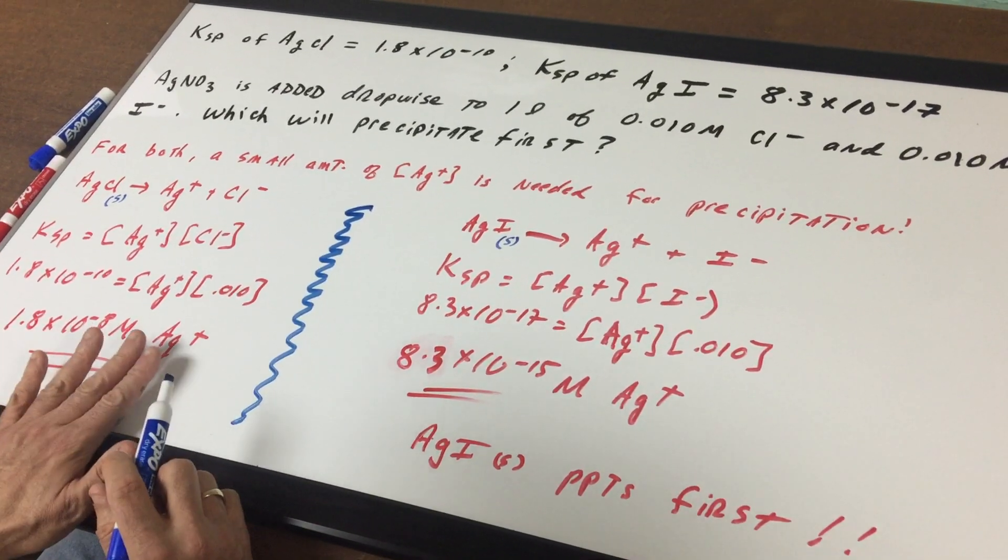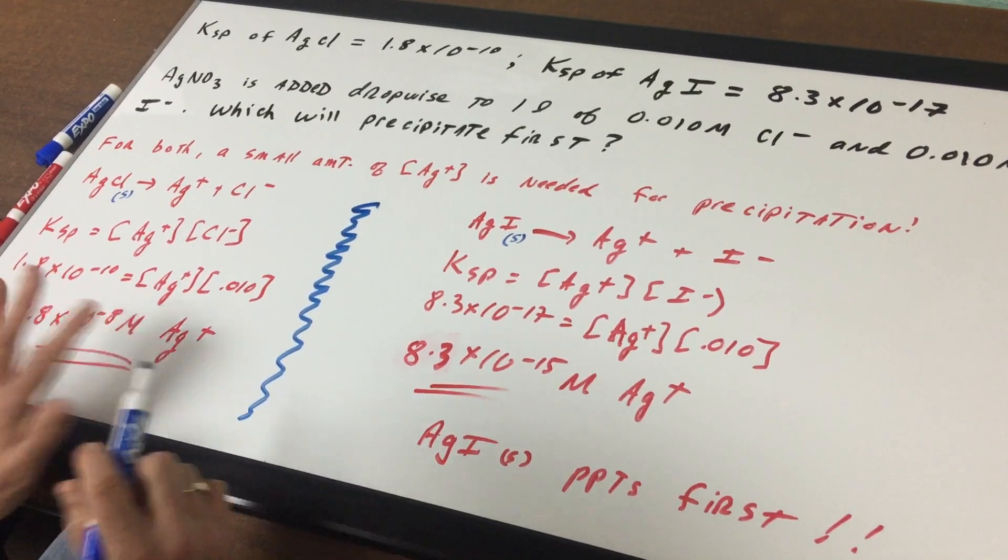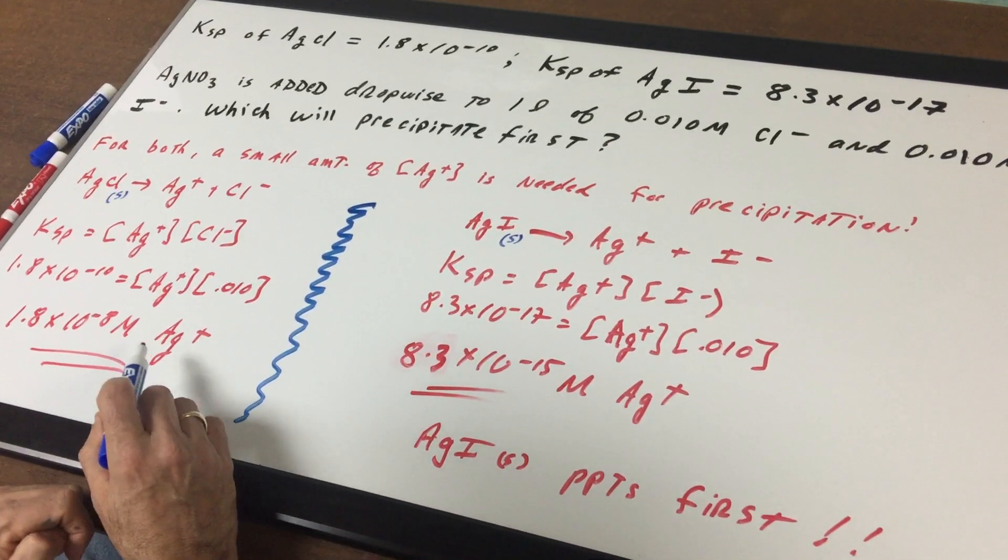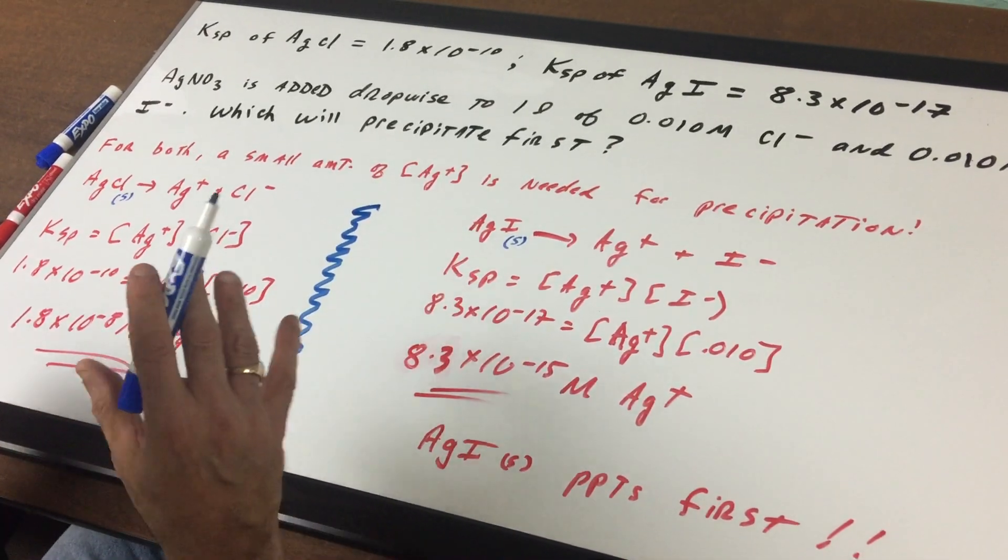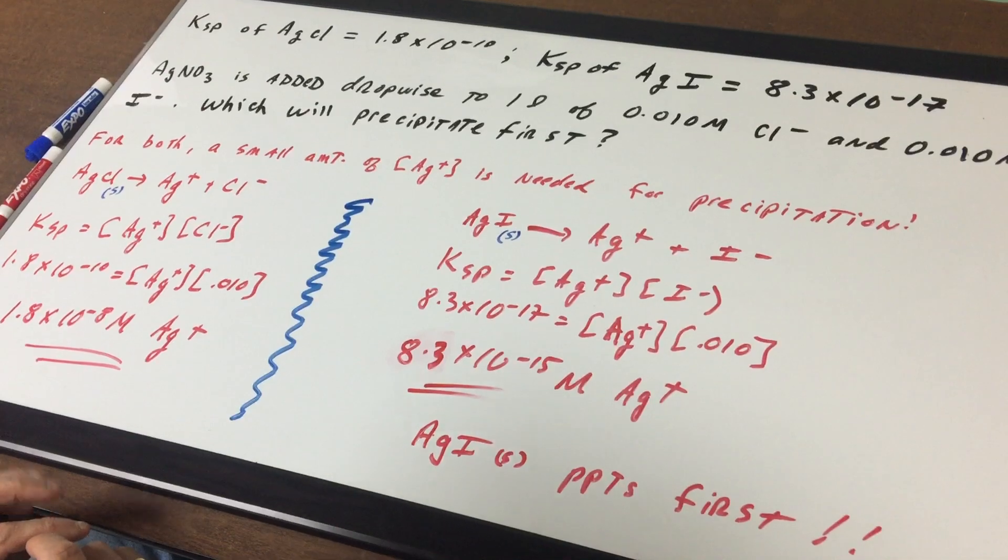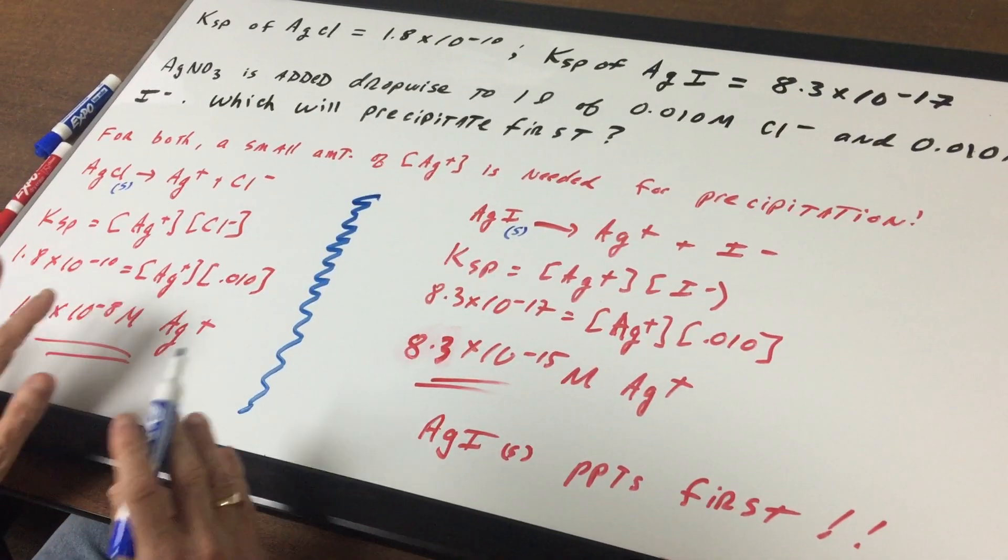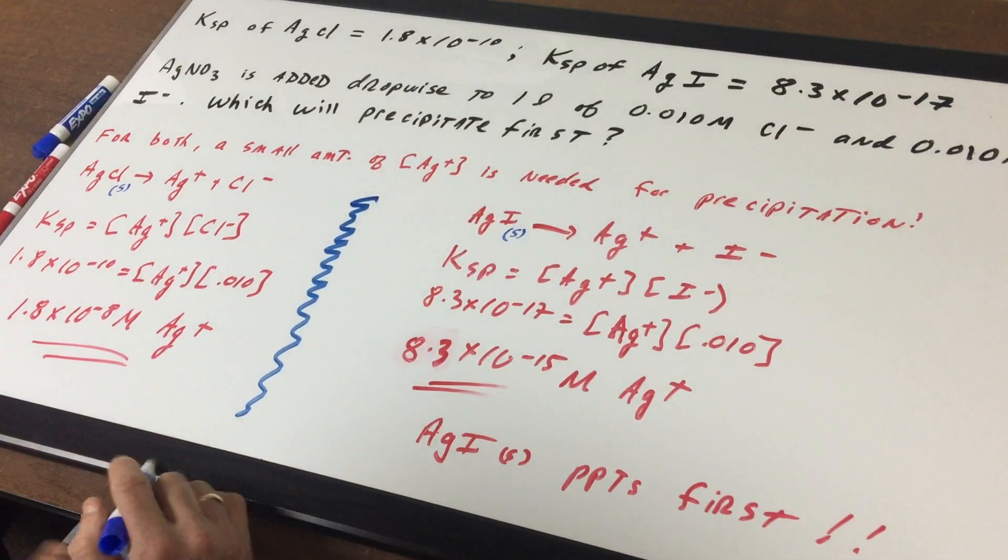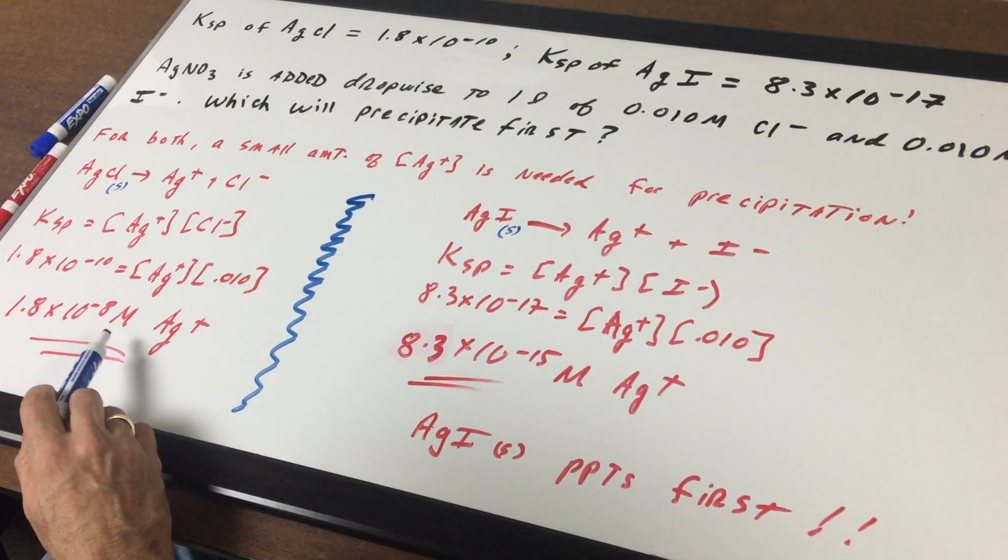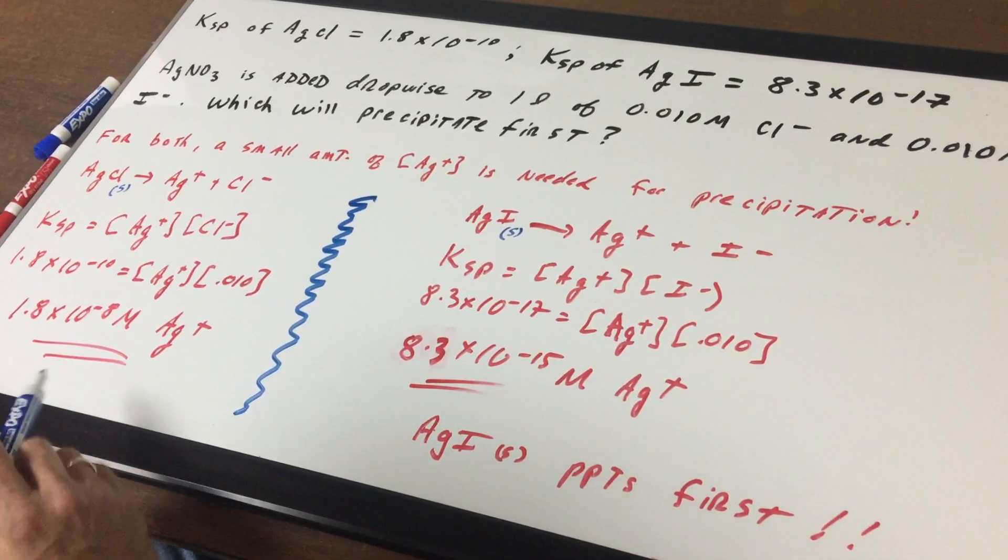This gives me 1.8 times 10^-8 molar of silver. If this is exceeded, you get precipitation. So that's the amount that I need to add, and then boom, we exceed that amount. This is the amount needed to cause equilibrium to give you a totally saturated solution. Anything beyond that will cause the precipitate to form.